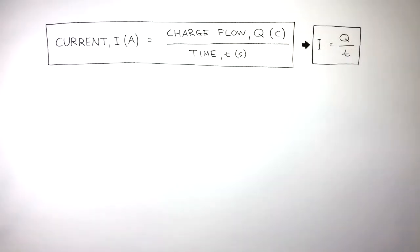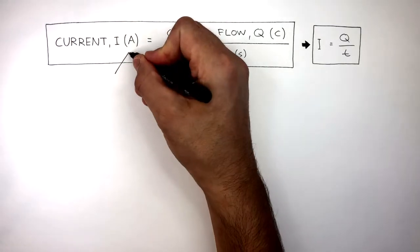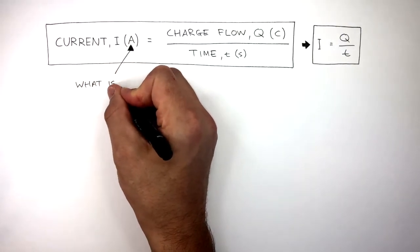This equation can be simplified to I equals Q over T, which is just current equals charge flow divided by time. To understand how to use this equation, let's focus on the question: What is 1 amp?